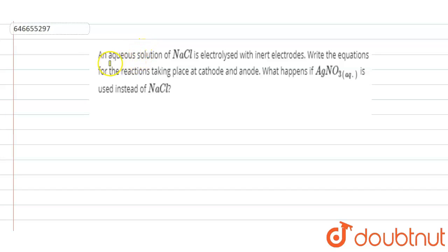Hello everyone, here our question is: an aqueous solution of NaCl is electrolyzed with inert electrodes. Here, electrodes are inert. First of all, note this point. Write the equations for the reaction taking place at cathode and anode. What happens if AgNO3 aqueous is used instead of NaCl?